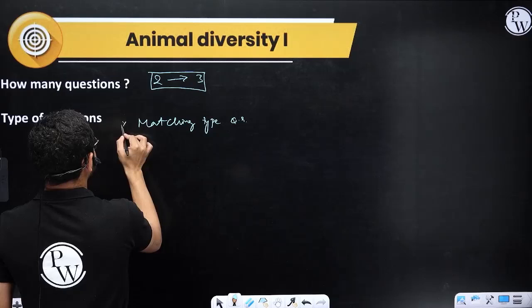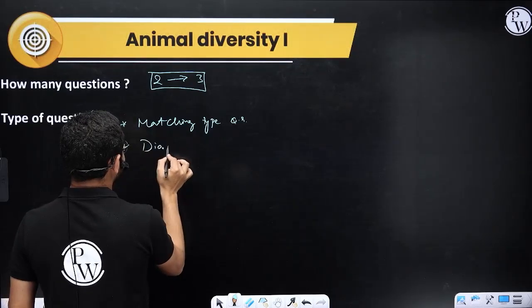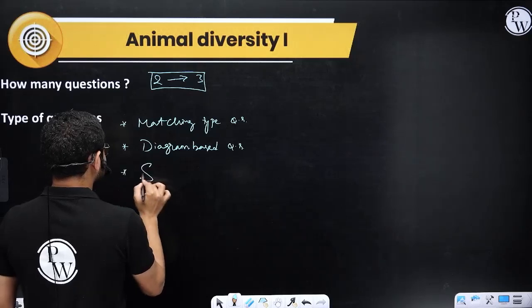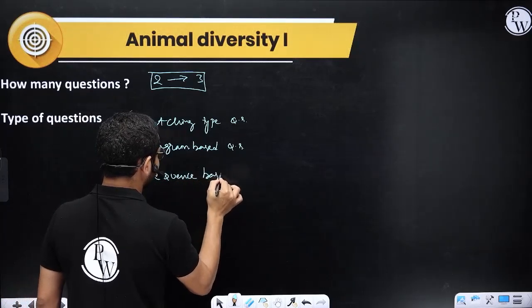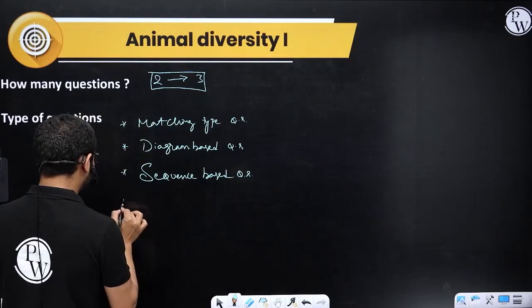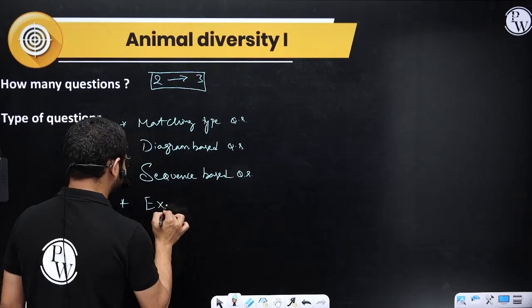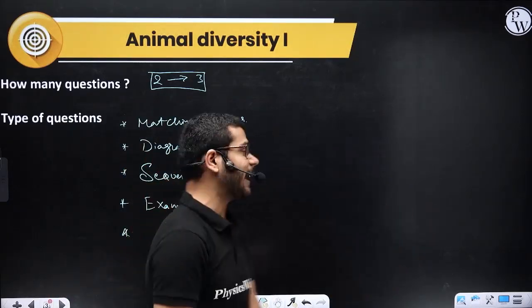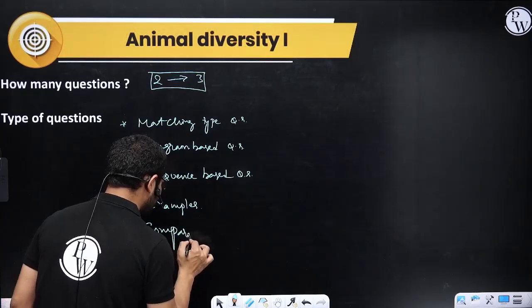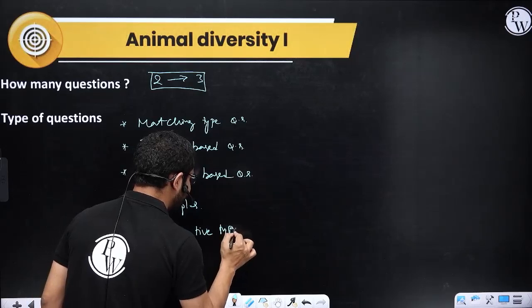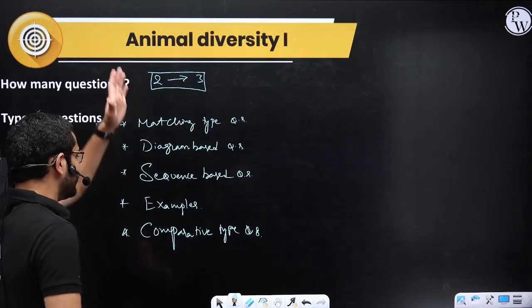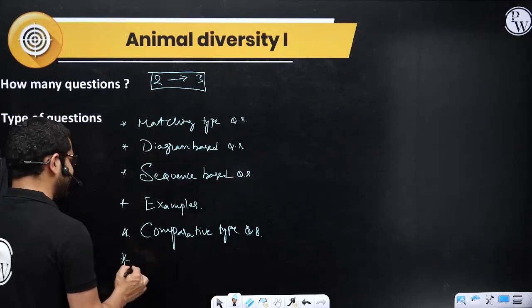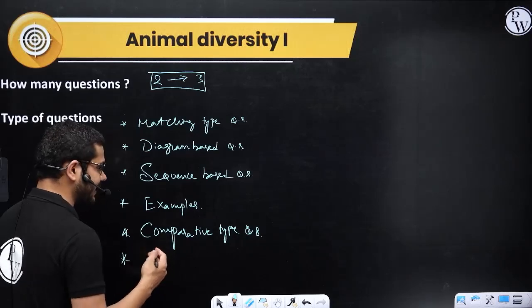Most important examples are very important. Reading the characteristics of animal groups and being able to compare them is crucial. So comparative type questions come frequently, and in this many kinds of questions appear. For example, single word type questions.